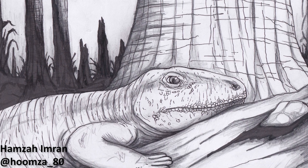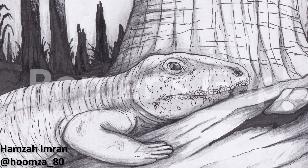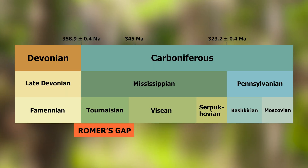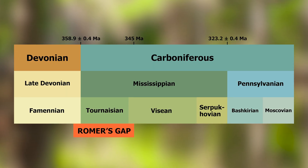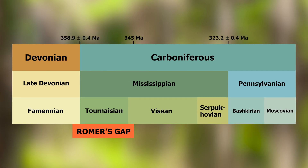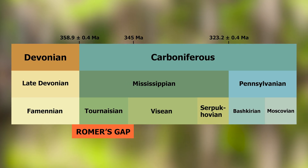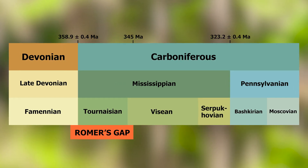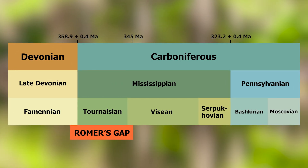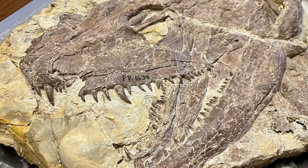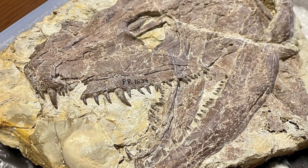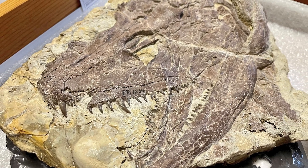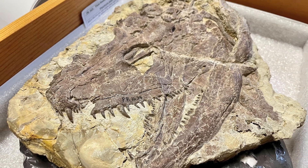One of these missing pieces of the puzzle is the so-called Roma's Gap. This stretches from the very end of the Devonian period, 360 million years ago, for 15 million years until about 345 million years ago in the first part of the Carboniferous Period. Annoyingly for those of us interested in the history of vertebrate evolution — our own evolution — this is a key time in life's past.